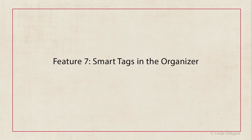Feature seven is Smart Tags in the Organizer. If you're not familiar with the Organizer, it's a program that comes bundled free with Photoshop Elements to help you organize and more easily find your photos and files, among other things. I love the concept of Smart Tags because they tag my photos and files for me based on the content of the photos, and I need all the help I can get.